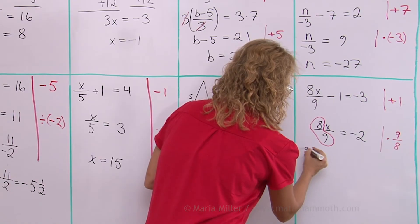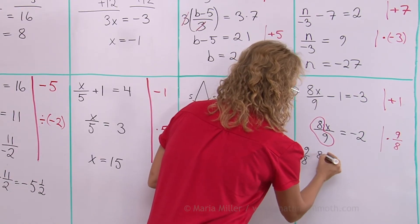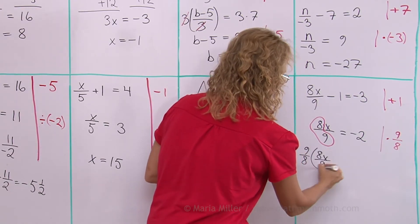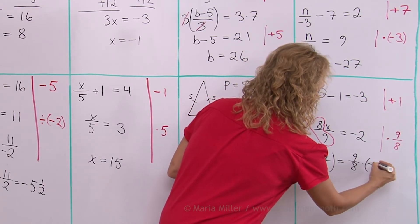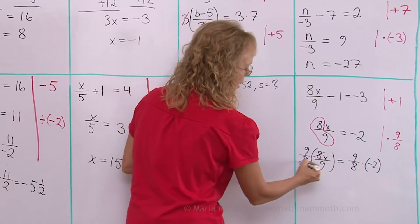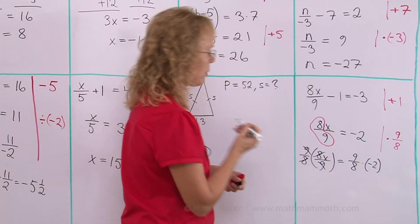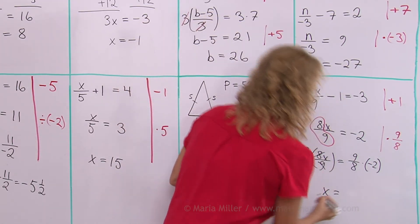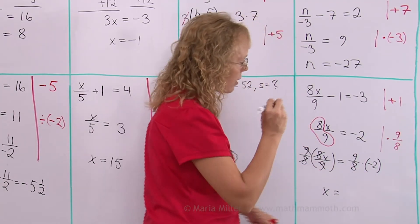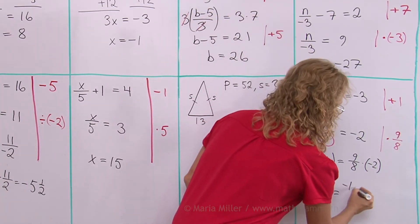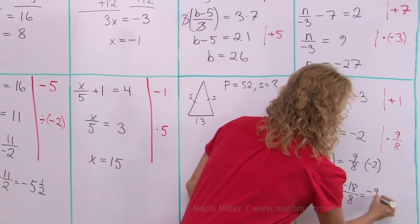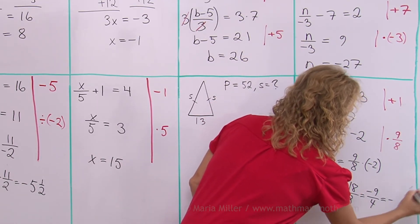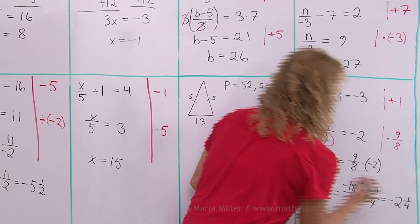You see what happens? 9 over 8 and then 8x over 9. Then over here, 9 over 8 times negative 2. And see now, 8s cancel, 9s cancel. And we have x alone. Over here, I need to multiply negative 2 times 9, negative 18 over 8. Now that simplifies to negative 9 over 4, which is then negative 2 and 1 fourth.